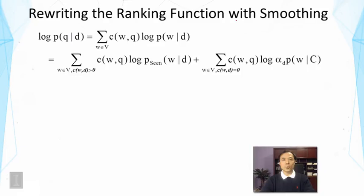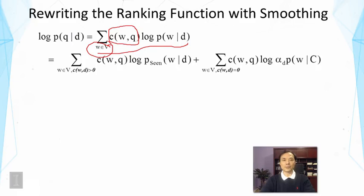If we plug in this smoothing formula into our query likelihood ranking function, we get the following. The formula is written as a sum over all the query words, equivalently expressed as a sum over all the vocabulary with a count of the word in the query, so in effect we are just taking a sum over query words. In our smoothing method, words not observed in the document have a different form of probability, so we decompose this sum into two parts.